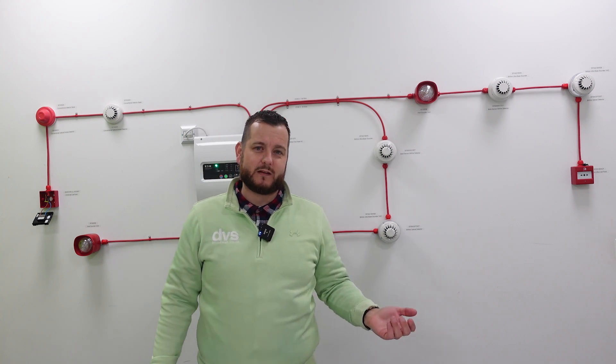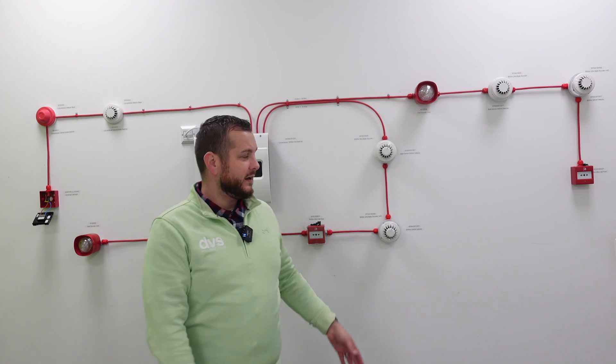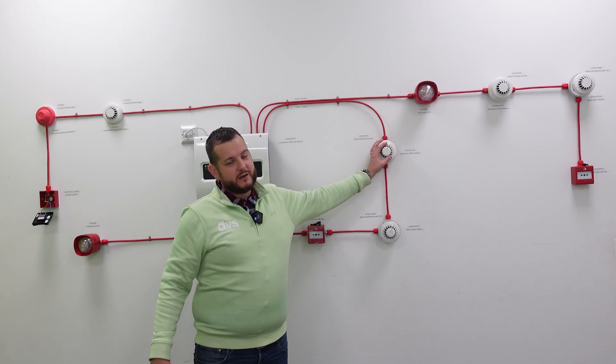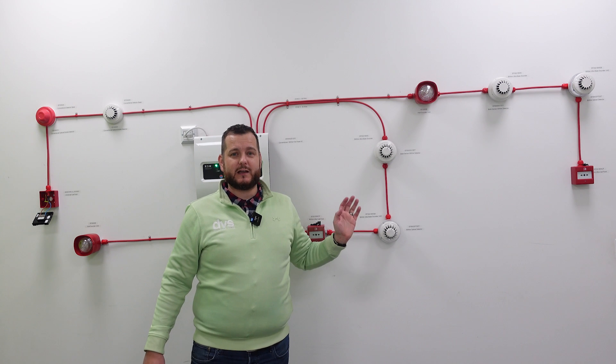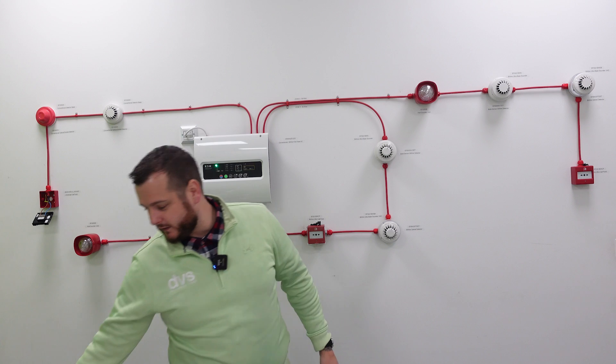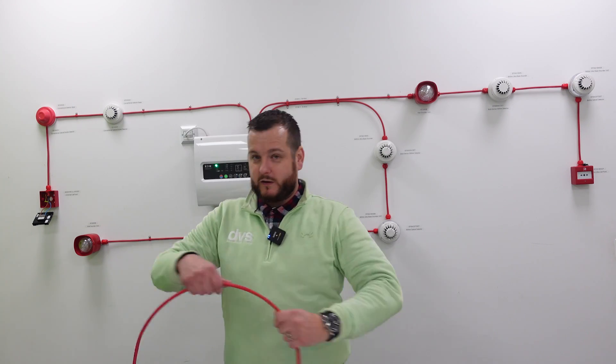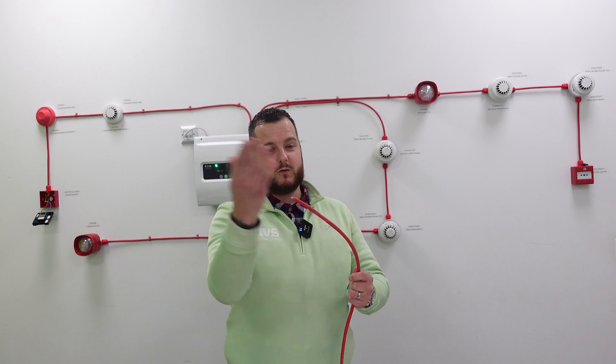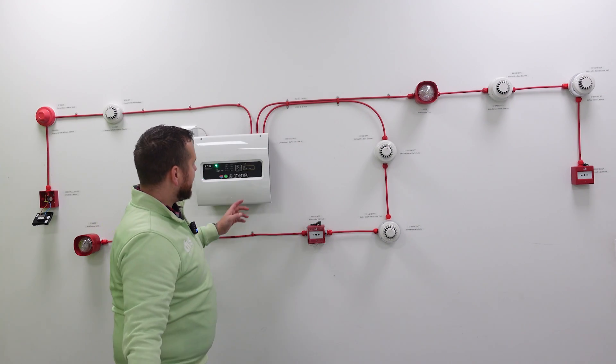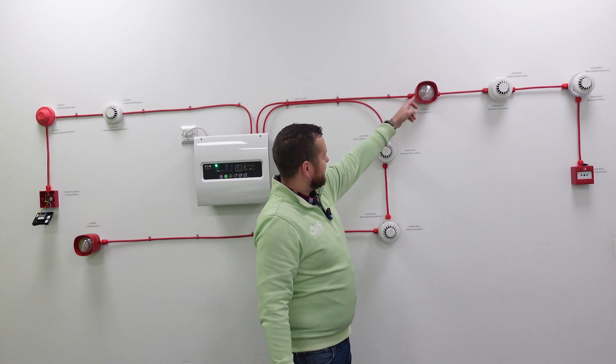The ByWire system by nature allows us to do detection and the alarm circuitry on the same cable, which is quite unique. There are some other manufacturers out there that can do that, but with Eaton product, if you use the ByWire Flex panel and you use the ByWire devices, they do need to be the same. Don't put other people's devices on the same circuit.